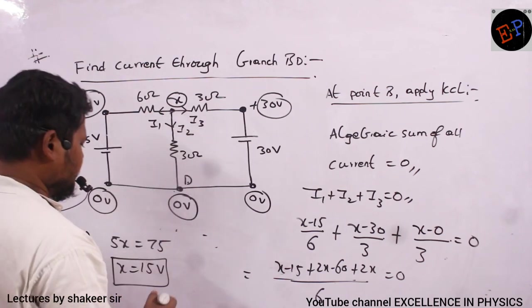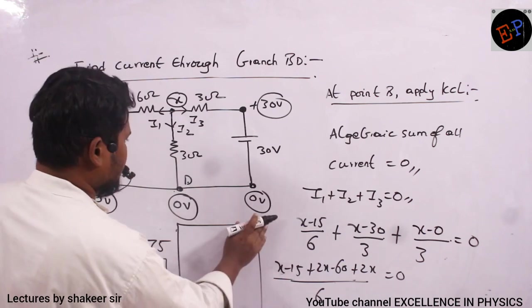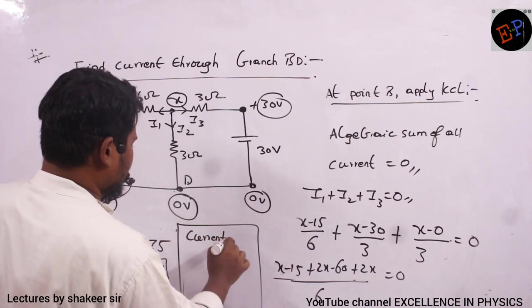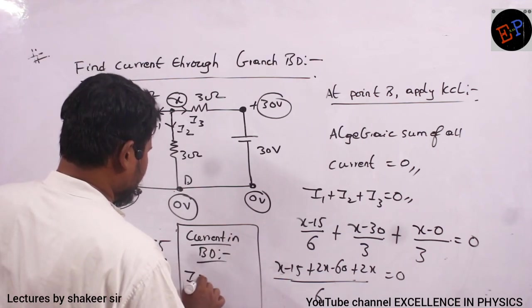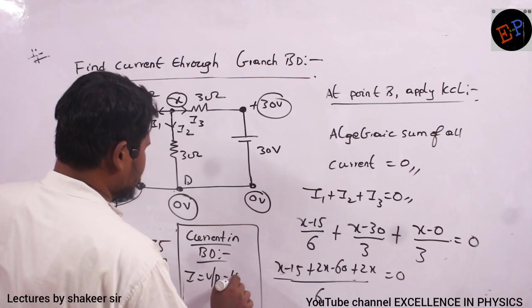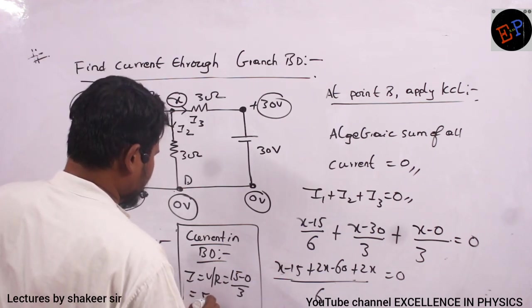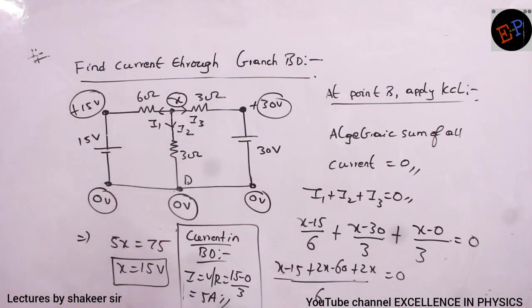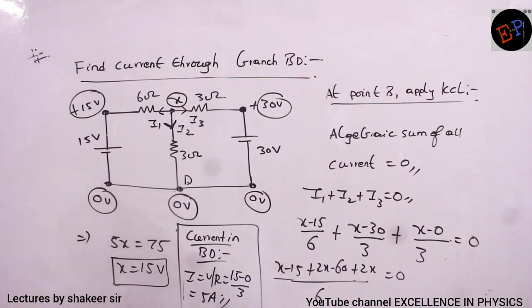X value is 15 volts. Current in branch BD: I = (15−0)/3 = 5 amperes. The direction of current is from B toward D. That is the final answer.